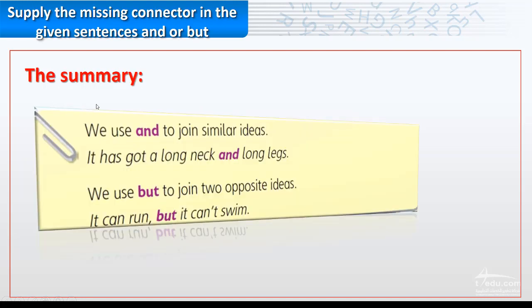We've reached the summary. We use and to join similar ideas. Like, it has got a long neck and long legs. So these are similar ideas. For example, I have a blue pen and black pen also. Blue and black means I have two pens.